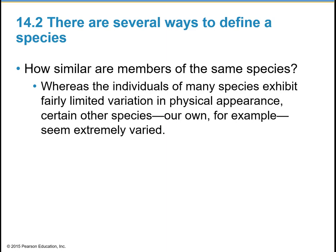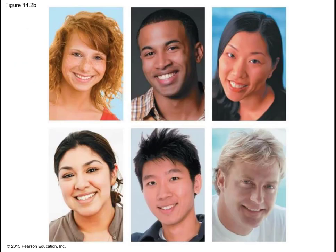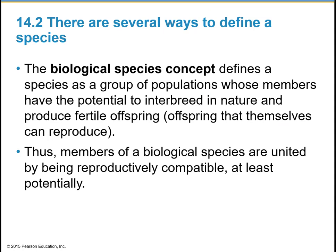The biological species concept defines a species as a group of populations whose members have the potential to interbreed in nature and — this part's important — they have to be able to produce fertile offspring. So the offspring themselves need to be able to reproduce. Thus, members of a biological species are united by being reproductively compatible, at least potentially.